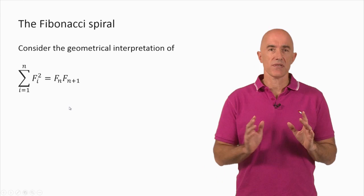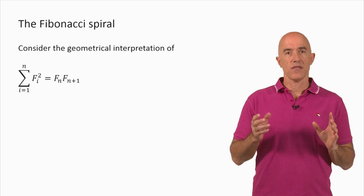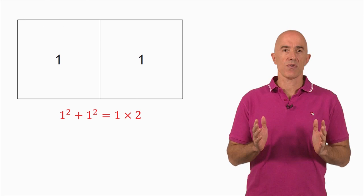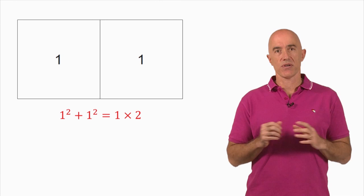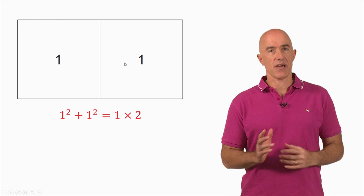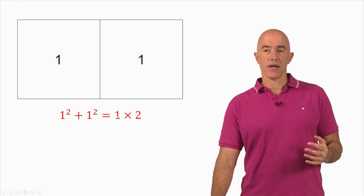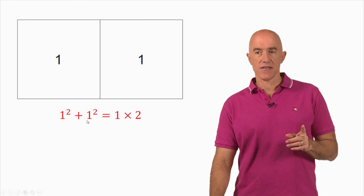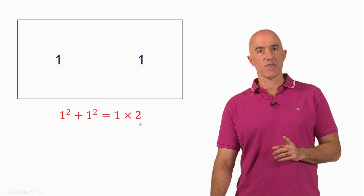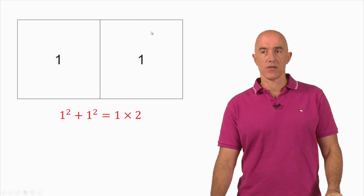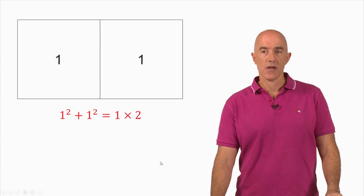So let's see how we can interpret this equation as an equation about areas to construct the Fibonacci spiral. We start with the first two Fibonacci numbers: F1 equals 1 and F2 equals 1. We put two squares next to each other, each with side length 1 and area 1. The identity tells us that 1 squared plus 1 squared equals 1 times 2 — so this 1 times 2 is the area of a rectangle with width 1 and length 2.